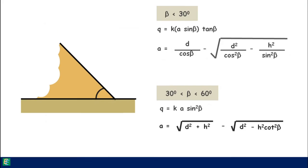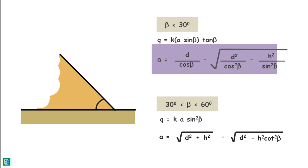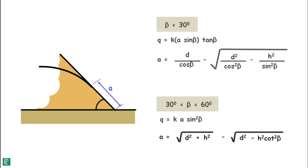One important thing to notice is that in both cases the value of a — the distance of the exit point of the seepage line from the top of the dam at the discharge face — does not depend on the amount of seepage discharge. It is completely dependent upon the geometry of the downstream slope.